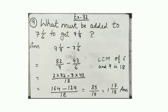9 times 9 is 81 plus 1 equals 82, 82 upon 9. 7 1/6, 6 times 7 is 42 plus 1 equals 43, 43 upon 6. You know very well how to do the solution. So answer is 35 by 18. It is improper fraction. So we will convert it into mixed numeral. 1 17/18 is the answer.